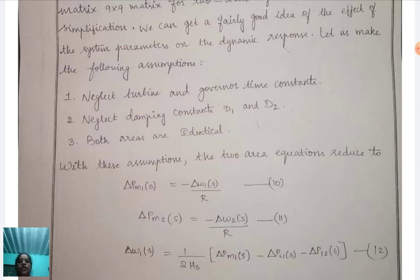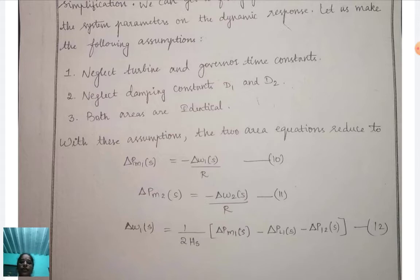With these assumptions, the two-area equations reduce to: del P_M1(s) = −del ω1(s) / R, and del P_M2(s) = −del ω2(s) / R. Therefore, del ω1(s) = (1 / 2Hs) × [del P_M1(s) − del P_L1(s) − del P_12(s)].